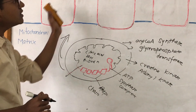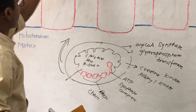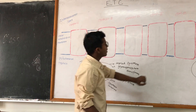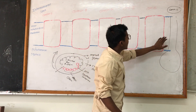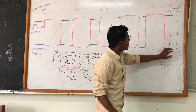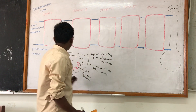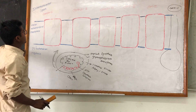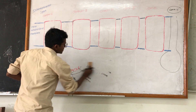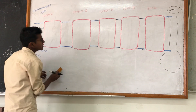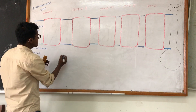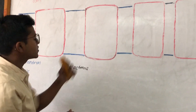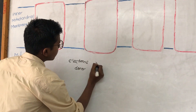If we take a cross section of the mitochondria, we get these structures. For clarity, I have made a simplified version showing complex 1, complex 3, complex 4, complex 2, complex 3, and finally complex 5, often known as the ATP synthase complex. The electron transport chain is a process in which electrons are transferred from an electron donor to an electron acceptor.